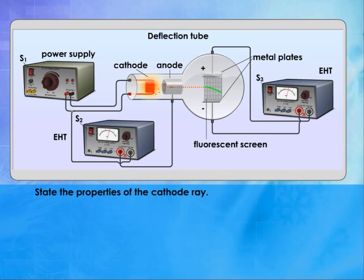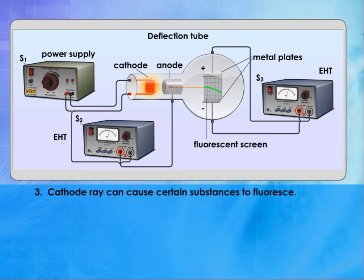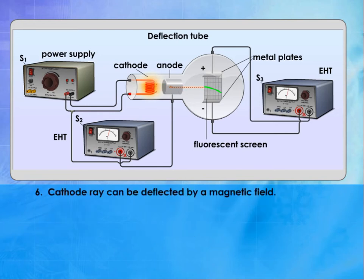The properties of the cathode ray are summarized as follows: 1. Cathode ray travels from the cathode to the anode in a straight line. 2. Cathode ray has high kinetic energy. 3. Cathode ray can cause certain substances to fluoresce. 4. Cathode ray is made up of negatively charged particles called electrons. 5. Cathode ray can be deflected by an electric field. 6. Cathode ray can be deflected by a magnetic field.